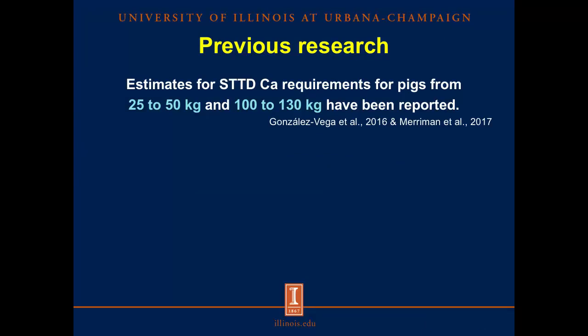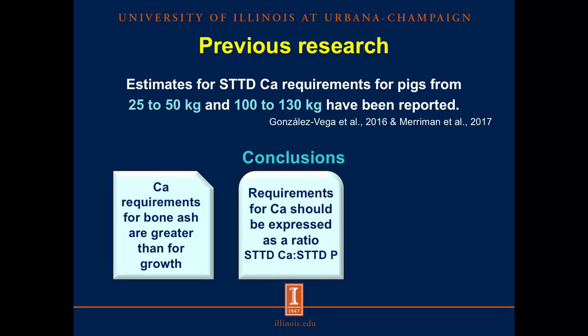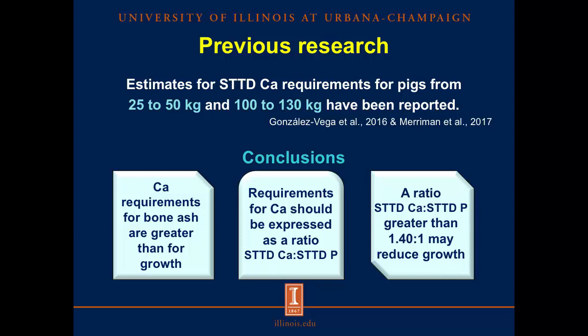Having these values, we are able to formulate diets based on digestible calcium and to establish digestible calcium requirements. Indeed, estimates for standardized total tract digestible calcium requirements for pigs from 25 to 50 and 100 to 130 kg have been reported. The conclusions of these experiments were that calcium requirements for bone ash are greater than for growth performance, that requirements for calcium should be expressed as a ratio between digestible calcium and digestible phosphorus, and that a ratio greater than 1.40 to 1 may reduce growth performance. So these two experiments leave a gap between 50 and 100 kg pigs.